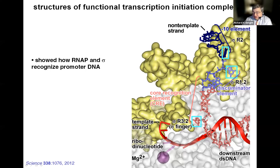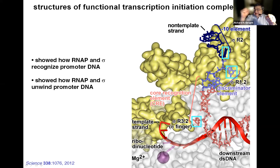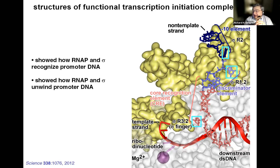For all of these nucleotides, there are hydrogen-bonded interactions with functional groups on bases that allow readout of sequence. The structure also showed how RNA polymerase and sigma work together to unwind promoter DNA to form the transcription bubble. The first nucleotide of the minus-10 element and the last nucleotide of the minus-10 element, boxed in cyan, and the first nucleotide of the discriminator element, boxed in cyan—each is unstacked from the stacked single-stranded nucleotides of the non-template strand, flipped, rotated 180 degrees, and inserted into a pocket formed by sigma, which contacts essentially every atom of the base and reads sequence.